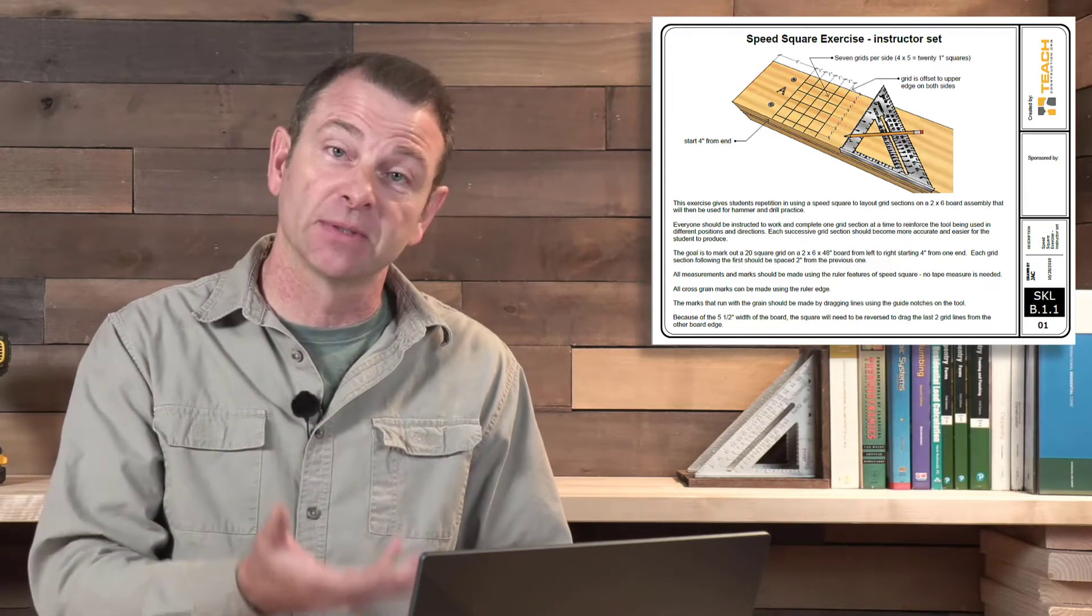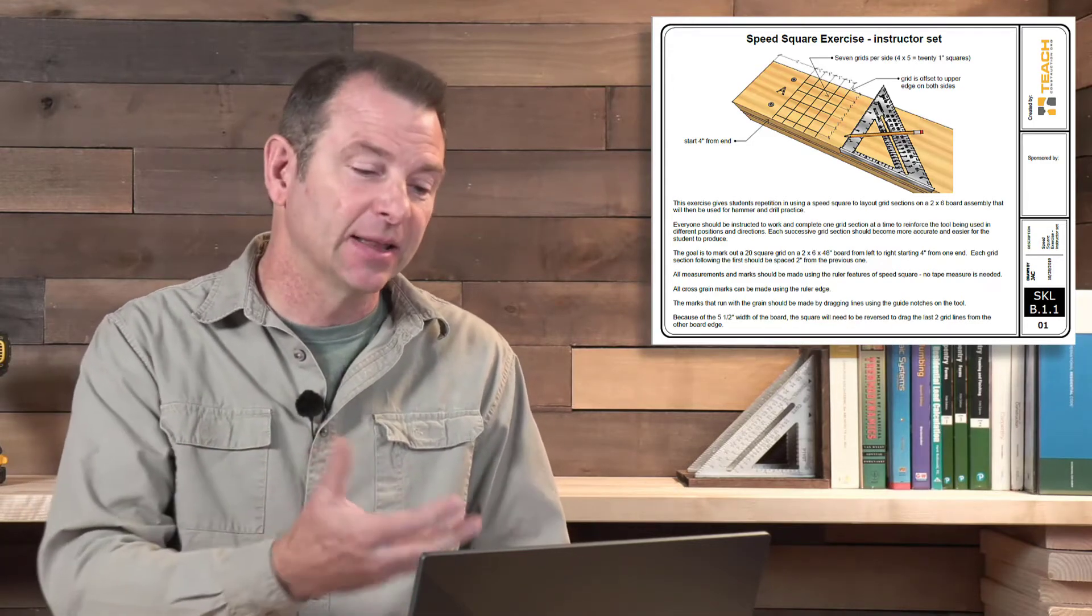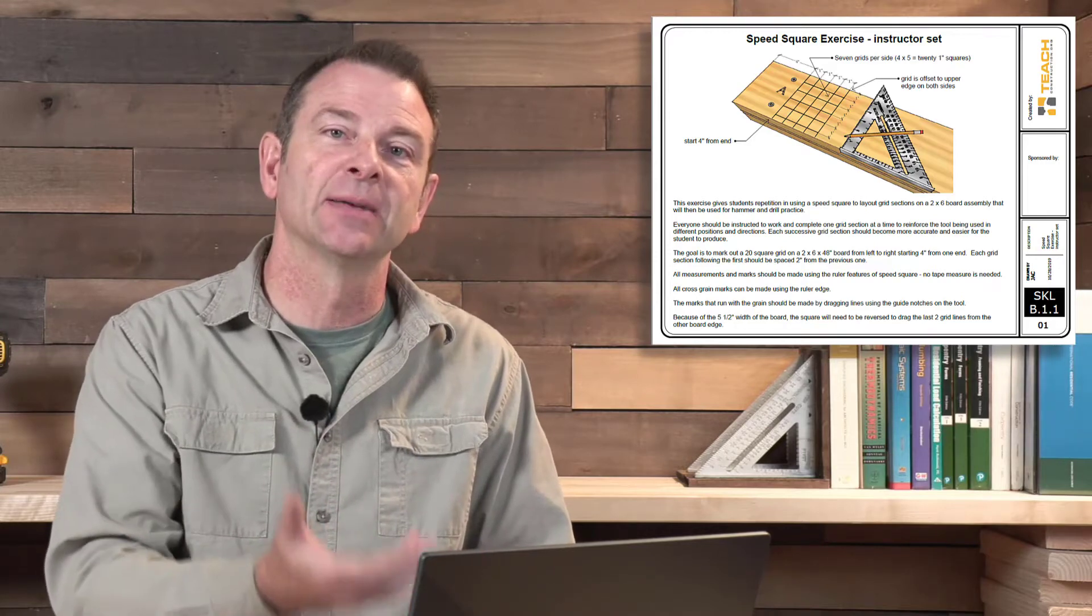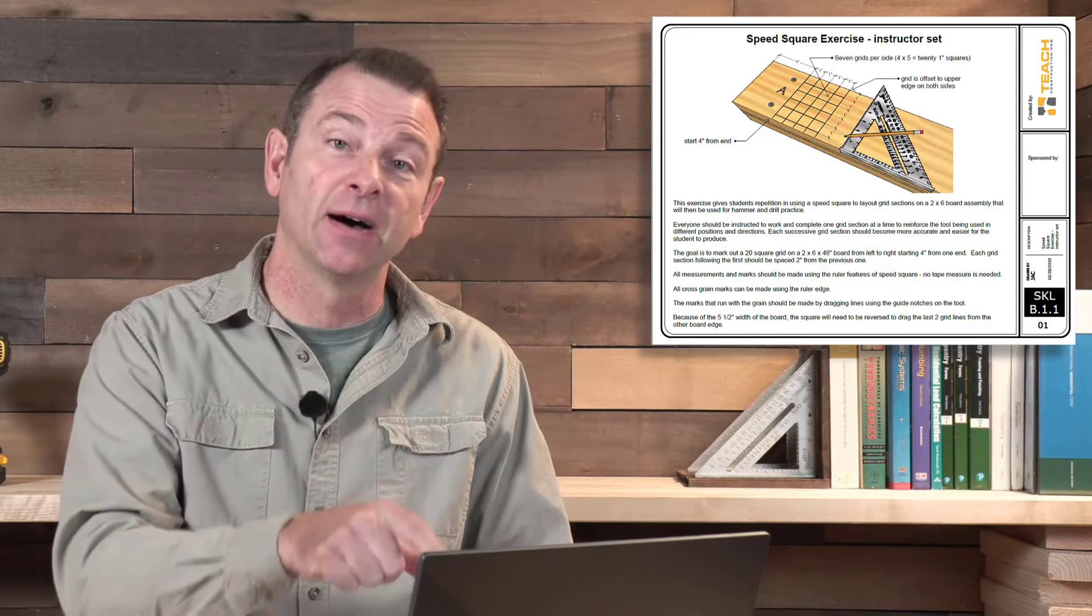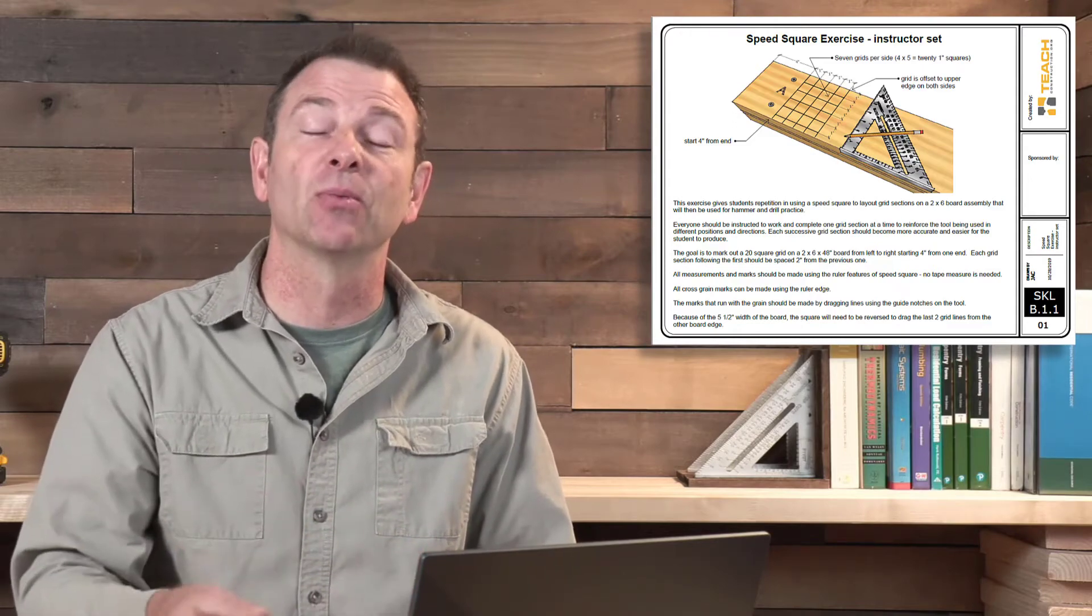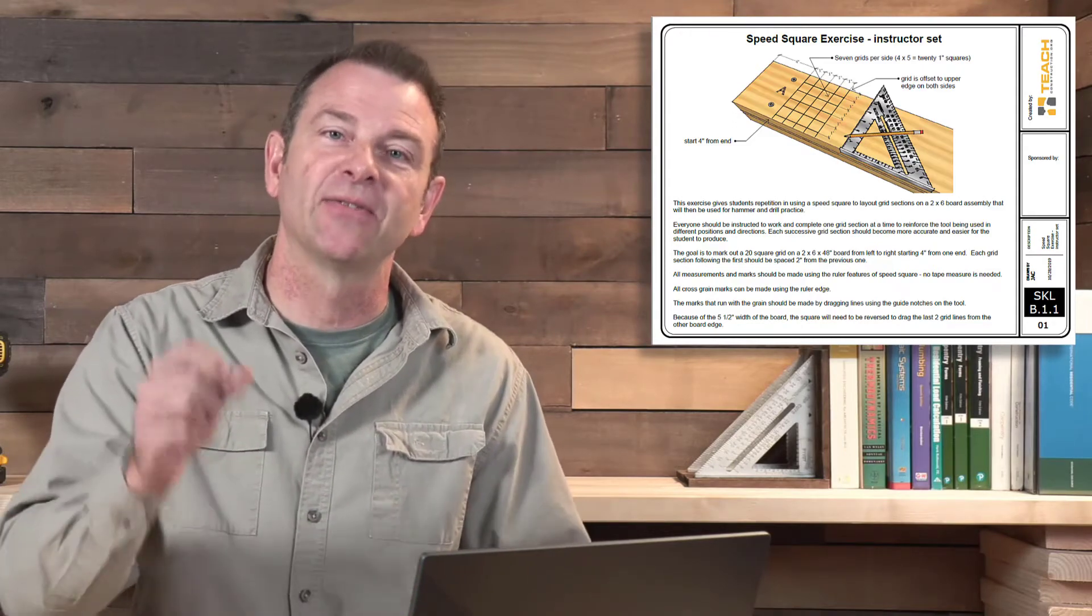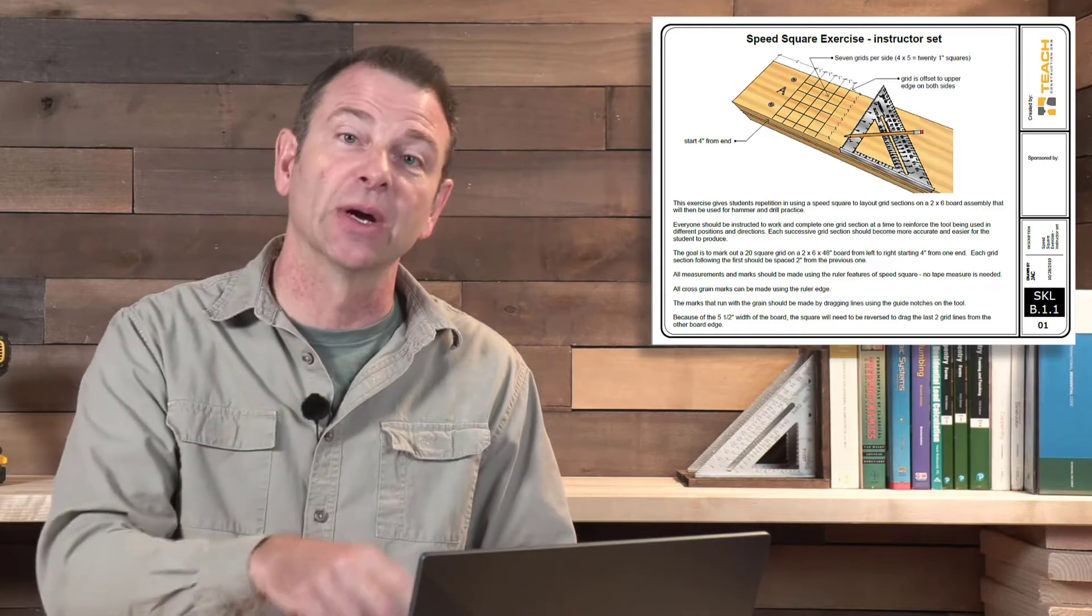What they'll do with the speed square is make these 20 square grids on the faces, both front and back, of this fastener board that they will then use to place fasteners within the grid squares that they've marked out with their speed square.